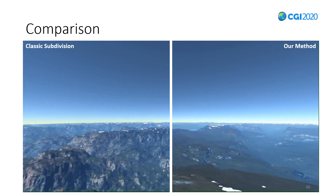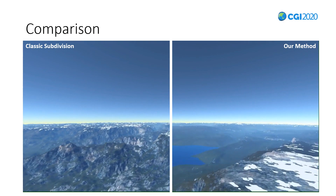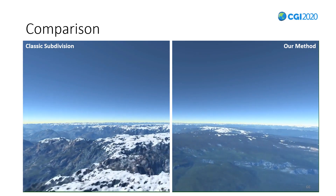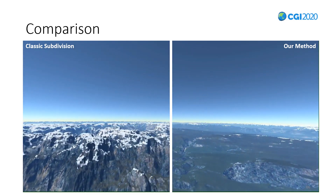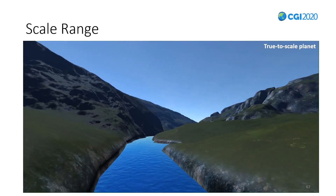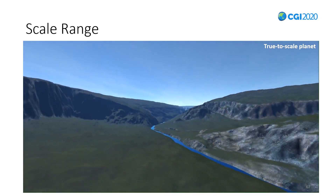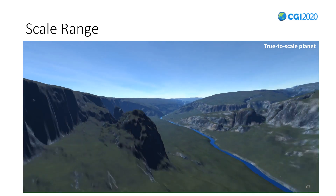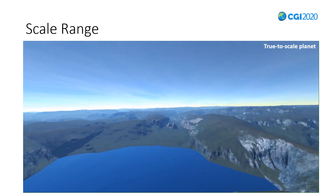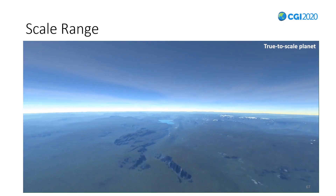This is a side-by-side comparison: to the right is our method, and to the left is a basic previous classic subdivision by midpoint displacement, using the same camera path on the same planet. Finally, we illustrate the scale range of our method for true-to-scale planets: rivers, varied terrain, valleys, different shapes of slopes leading to rivers and lakes, and a zoom out on a full true-to-scale planet.